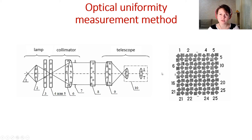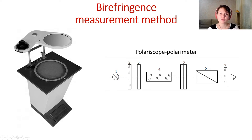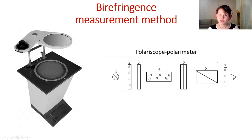Using the number of visible hatches, we can calculate the optical uniformity of the glass. The standard measurement method for birefringence is based on a polariscope or polarimeter, where we have a set of polarizers, a filter, and the glass blank.